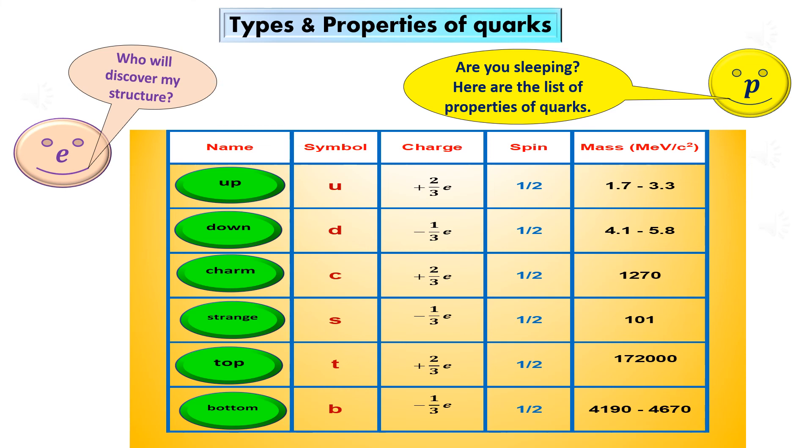Top quark. The symbol used to represent a top quark is T. The mass of the top quark is approximately 172 giga electron volts per C square. Its electric charge is plus two-thirds E, where E is the fundamental charge.